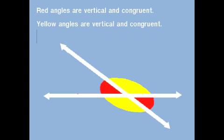You also need to know about vertical angles. Vertical angles are just opposite angles across from each other. In the picture, the yellow and the yellow are vertical angles, as are the red and the red.